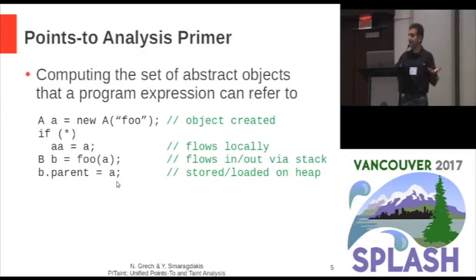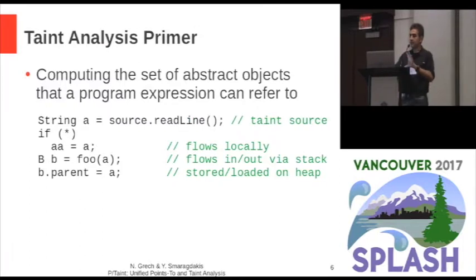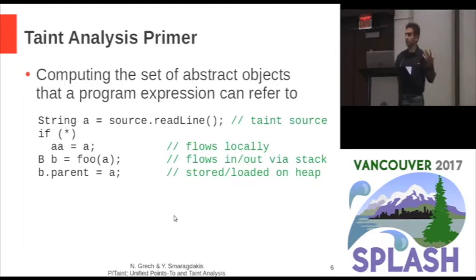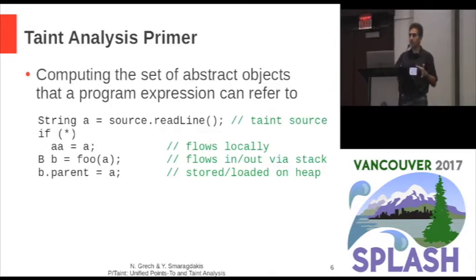Guess what? It's exactly the same for any taint reasoning, at whatever level of abstraction. All that changes is the source of tainted values — we have a taint source, and we need to track how these values flow locally through the stack and through the heap. Is this the same thing? And is taint an inherent property of the value, so we don't even need to think about it — we just anoint values as tainted and we're done? Well, there are some issues if you want to form a really precise analysis that make it not quite the same thing.